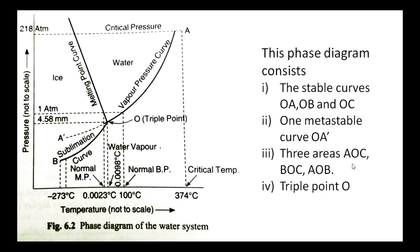Three areas exist between the curves: area AOC (water vapor), area BOC (ice), and area AOB. The area AOB represents the vapor phase existing in the gaseous state. The triple point O is the intersect point where all three curves meet, and is the triple point of the system.